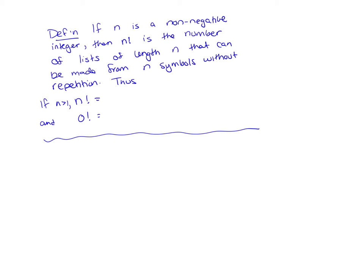So again, if n is a non-negative integer, so this works for positive integers 1, 2, 3, 4, but also for 0, then n factorial is the number of lists of length n that can be made from n symbols without repetition. So n factorial is just n times n minus 1 times n minus 2, all the way down to 1.